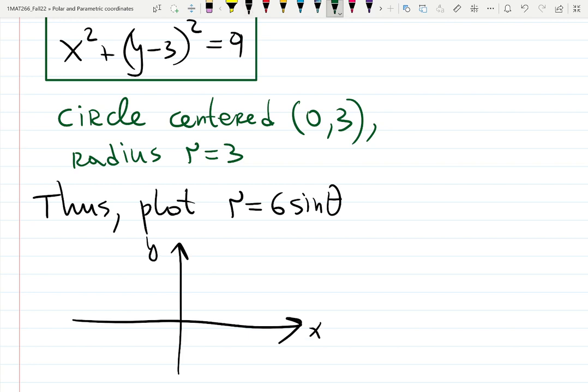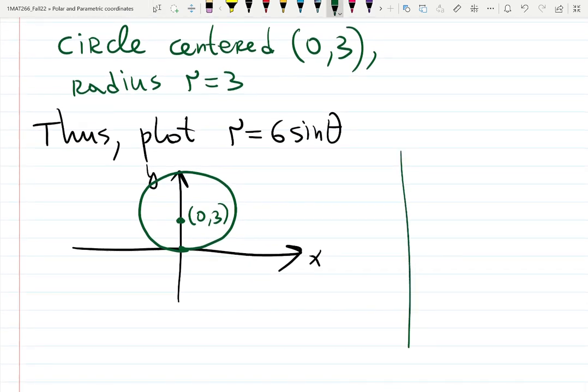Instead of 0, 0, it shifted up to 0, 3. So that is a new center. And the radius is 3. So the circle looks like this. The radius is 3. You can also check the points. So if you don't want to go to the Cartesian coordinates, you can also draw it like so.